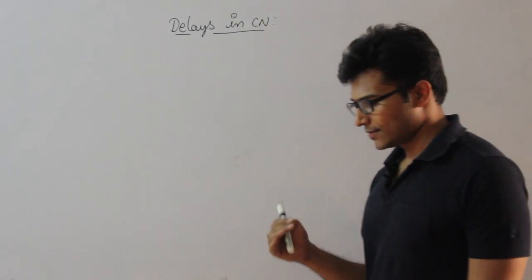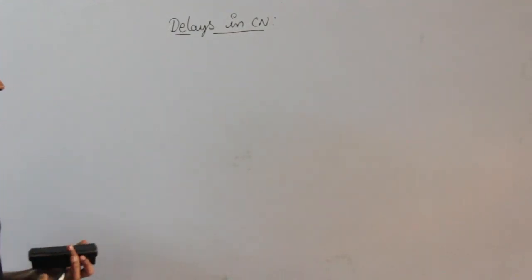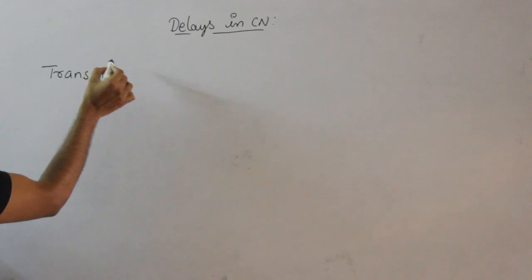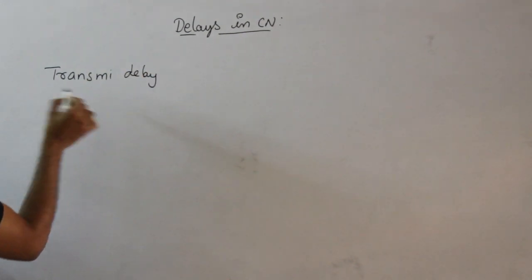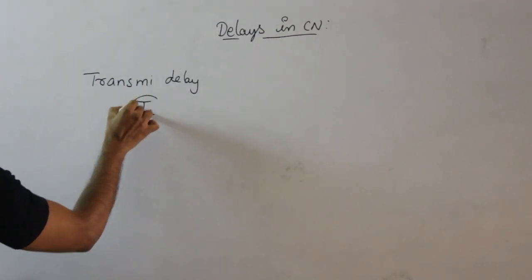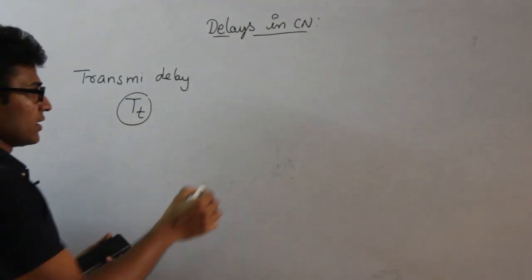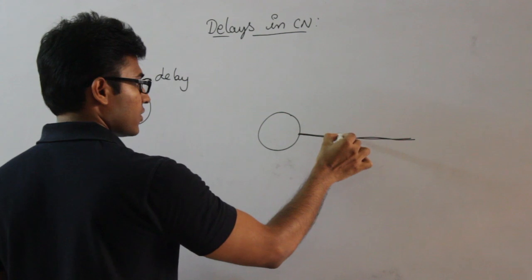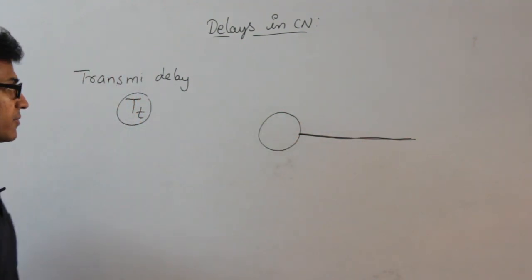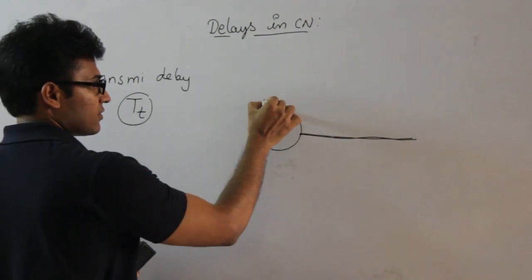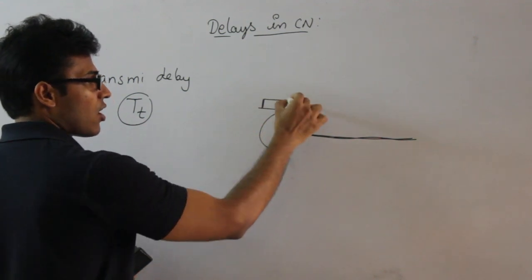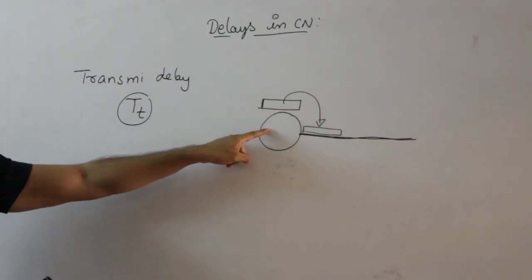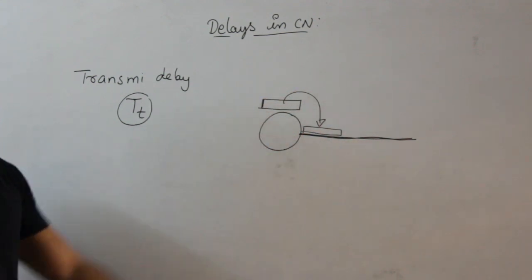Let's talk about the various delays in computer networks. The first one is transmission delay, denoted TT. Transmission delay is the time taken to transmit a data packet onto the outgoing link. So if this is a host and this is the propagation medium, transmission delay is the time taken to put the data packet from the host onto the outgoing link.